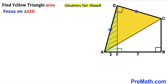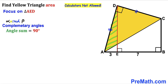Let's focus on right triangle AED and assume that alpha and beta are two complementary angles. In other words, the sum alpha plus beta must be equal to 90 degrees.